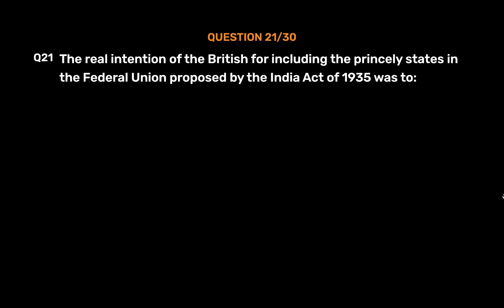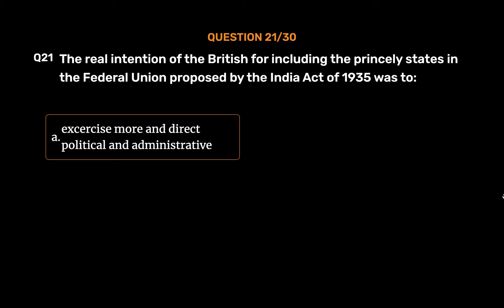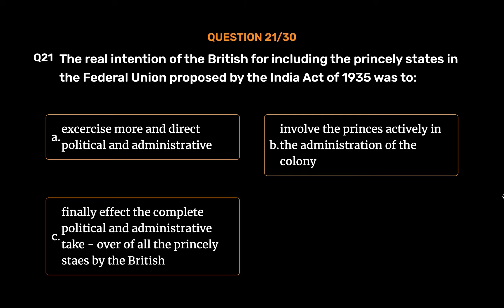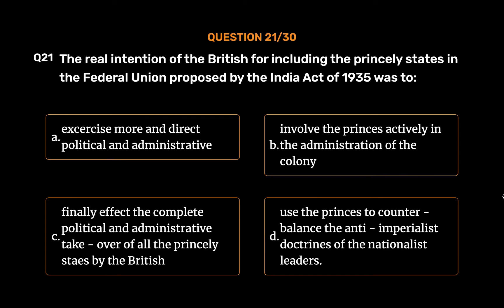Question No. 21. The real intention of the British for including the princely states in the Federal Union proposed by the India Act of 1935 was to: Option A: Exercise more and direct political and administrative control. Option B: Involve the princes actively in the administration of the colony. Option C: Finally affect the complete political and administrative takeover of all the princely states by the British. Option D: Use the princes to counterbalance the anti-imperialist doctrines of the nationalist leaders. The correct answer is Option D: Use the princes to counterbalance the anti-imperialist doctrines of the nationalist leaders.